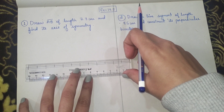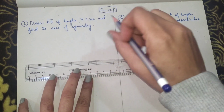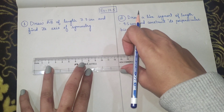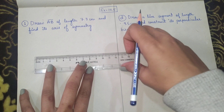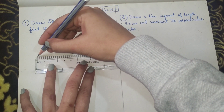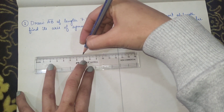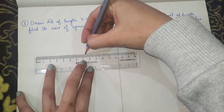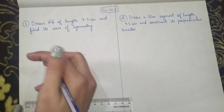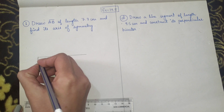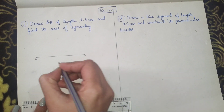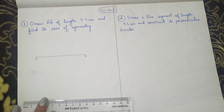We are supposed to construct the perpendicular bisector of line segment AB. For that, first we'll draw a line segment of 7.3 centimeters. Here I've drawn line segment AB of length 7.3 centimeters.